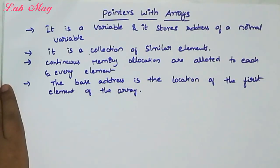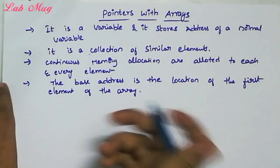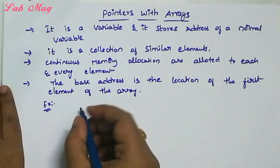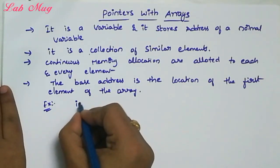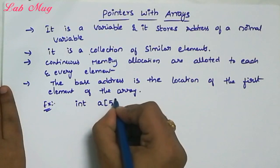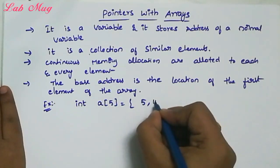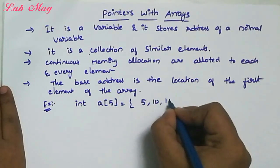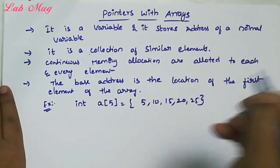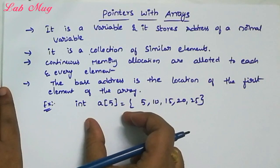Now some points about Pointers and Arrays. For example, I want to declare an array in integer data type: int a[5] = {5, 10, 15, 20, 25}. So 5 elements are available in this array.